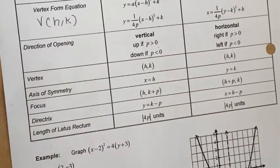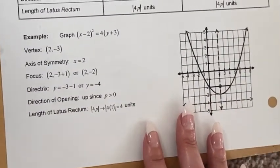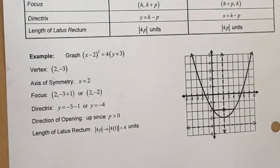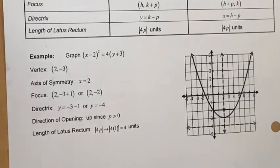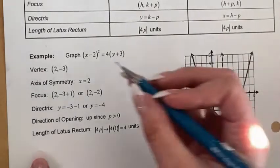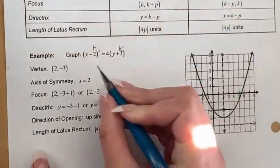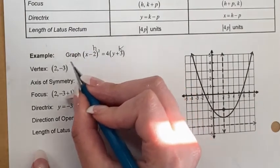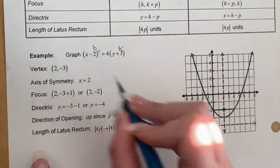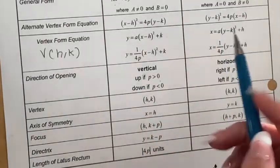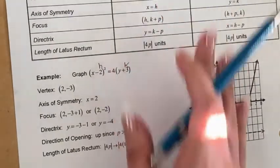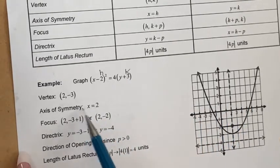Example: graph (x − 2)² = 4(y + 3). This equation is in alternate vertex form. From it, you can read h = 2 and k = −3 — remember to flip the sign because the formula uses negatives. So the vertex is (2, −3). Be careful with the sign when identifying h and k.